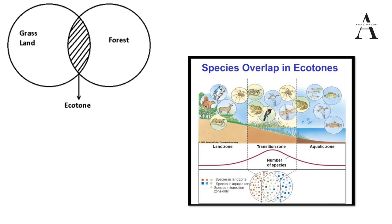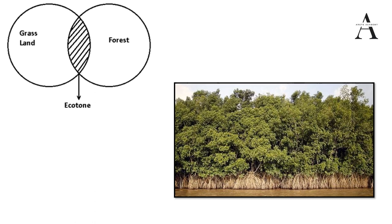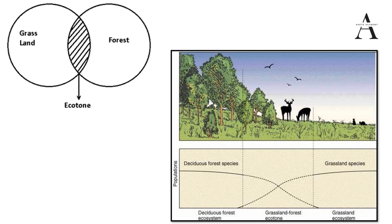In ecotone, species overlap — the transition zone between a land zone and an aquatic zone will have a greater number of species. This zone will have species from both the land habitat and the aquatic ecosystem. The number of species increases in ecotone. A good example is mangrove forests, where the terrestrial and marine ecosystems meet — mangrove forest is essentially an ecotone.